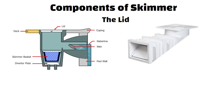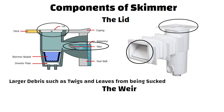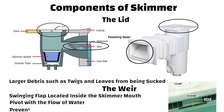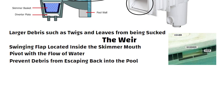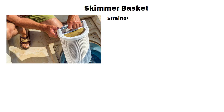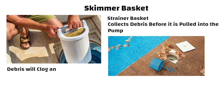Now let us understand the components of a skimmer. The lid is a visible component of the skimmer and works to keep larger debris such as twigs and leaves from being sucked into the pool's circulation system. The weir, also called a floating door, is the swinging flap located inside the skimmer mouth and will pivot with the flow of water. The main purpose of the weir is to prevent debris from escaping back into the pool. When the pool pump is turned off, the weir moves into a closed position which prevents debris from re-entering the pool. The skimmer basket, also known as the strainer basket, collects debris before it is pulled into the pump. Without the basket, debris will clog and damage the filtration system.